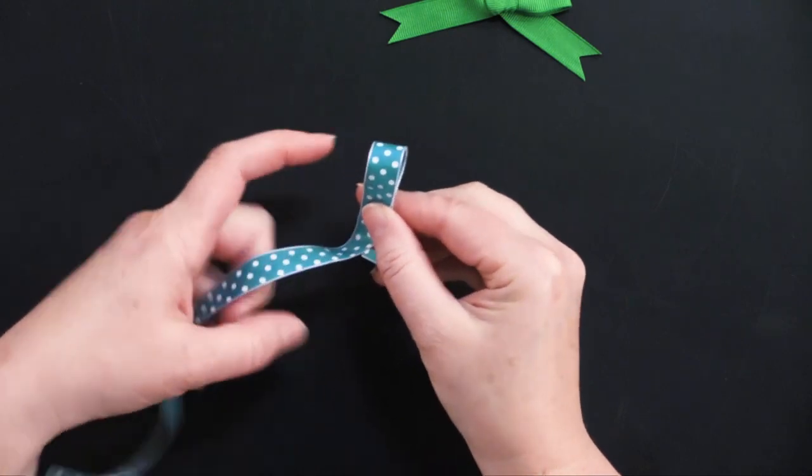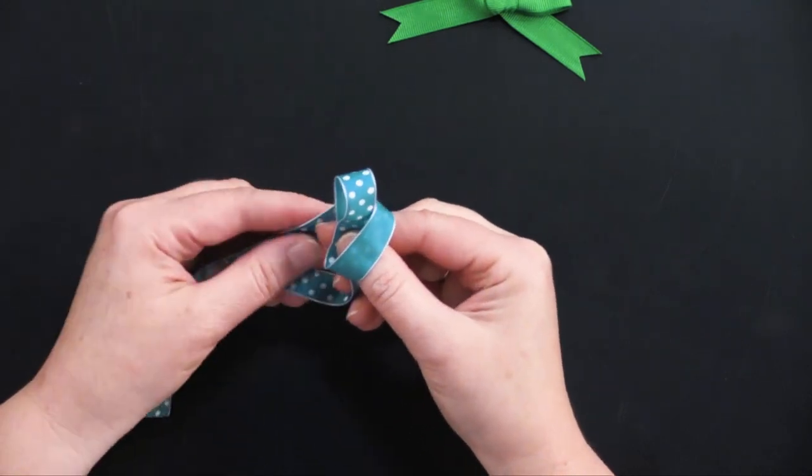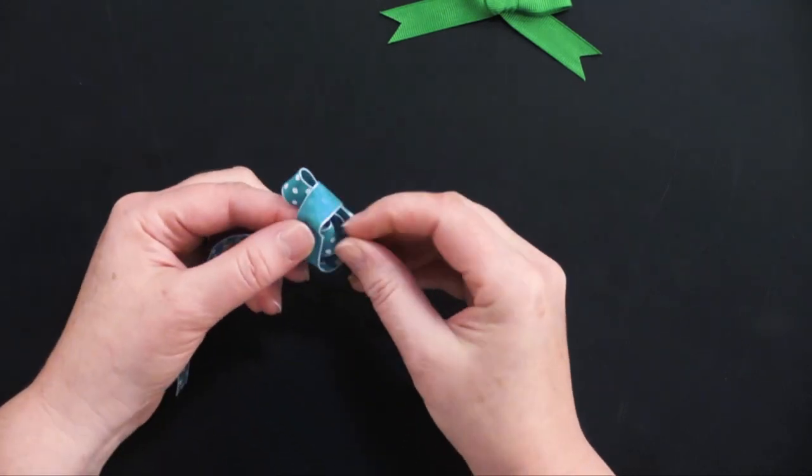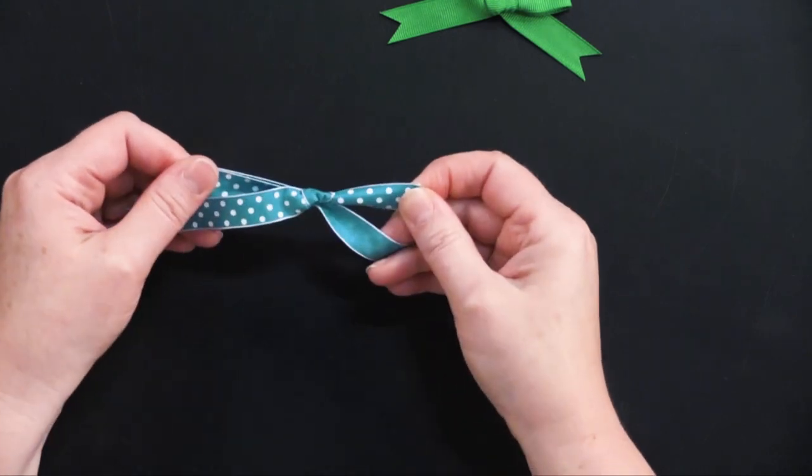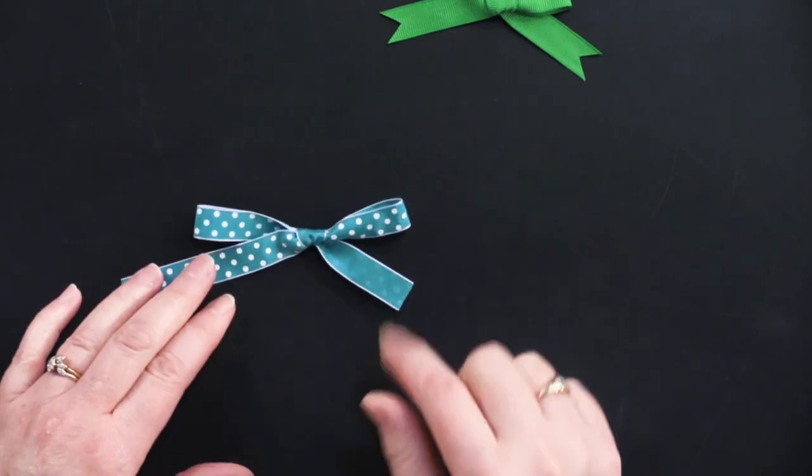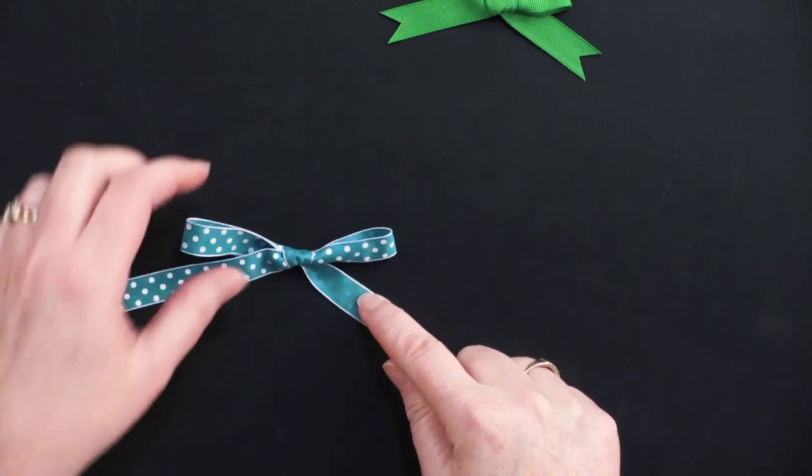We're making a loop, we're wrapping around, going through that little hole, we're making another loop and we're pulling tight. Now we've got one that doesn't have a pattern on it.